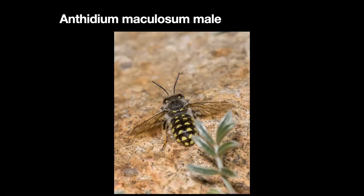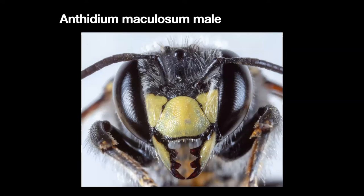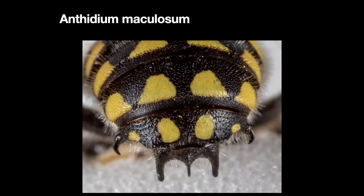Here you have Anthidium maculosum — this is a male guarding a patch of flowers. Here's the face of that male. Usually male bees come out before females — but not with Anthidium. All the Anthidium females come out before the males, so the males get to sleep in. But the males are quite territorial. Here's their fighting apparatus — they'll come at each other in a C shape and clash and fight for dominance.